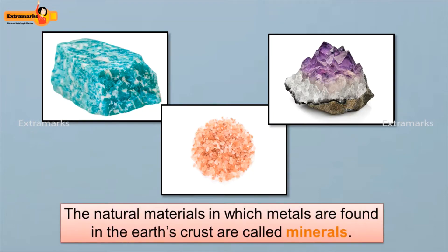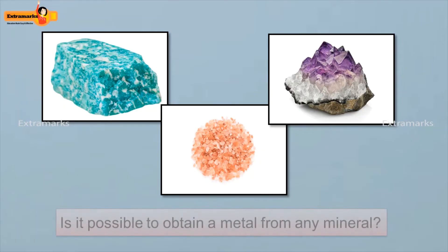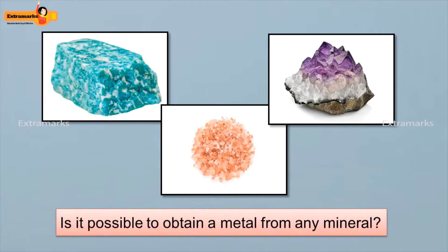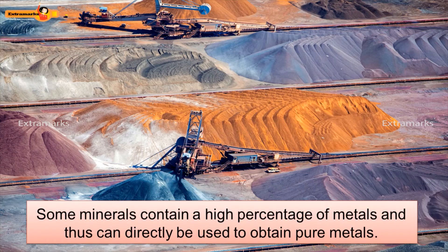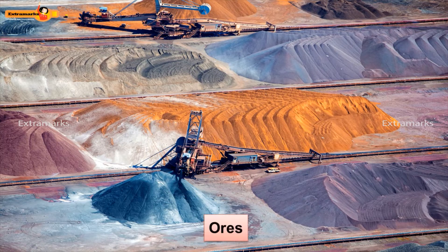The natural materials in which metals are found in the earth's crust are called minerals. So, is it possible to obtain a metal from any mineral? The answer is no. Some minerals contain a high percentage of metals and thus can directly be used to obtain pure metals. These are called ores.